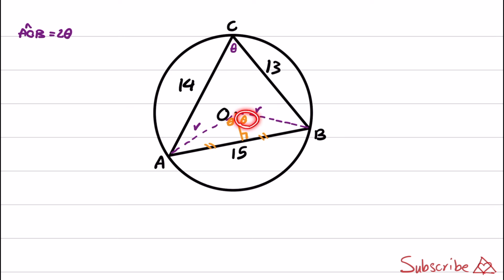Now we can use trigonometry relations for this angle. The sine of the angle theta is equal to opposite to hypotenuse. So it will be 15 over 2 divided by the radius, which is equal to 15 over 2R.